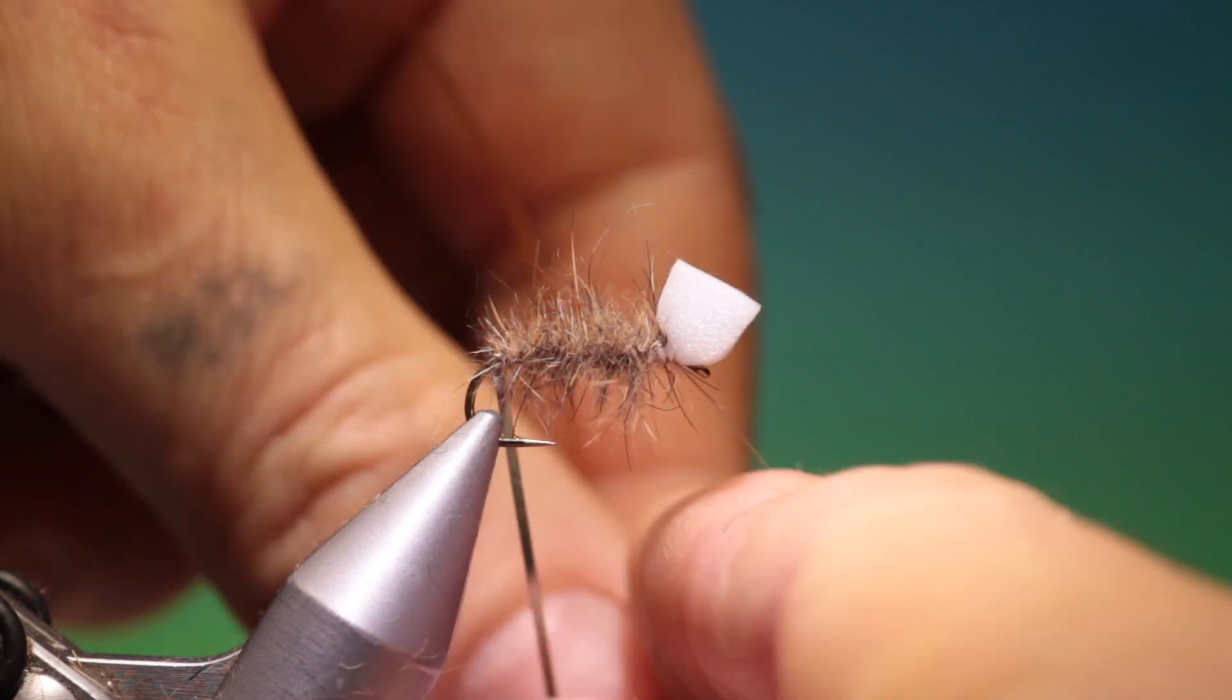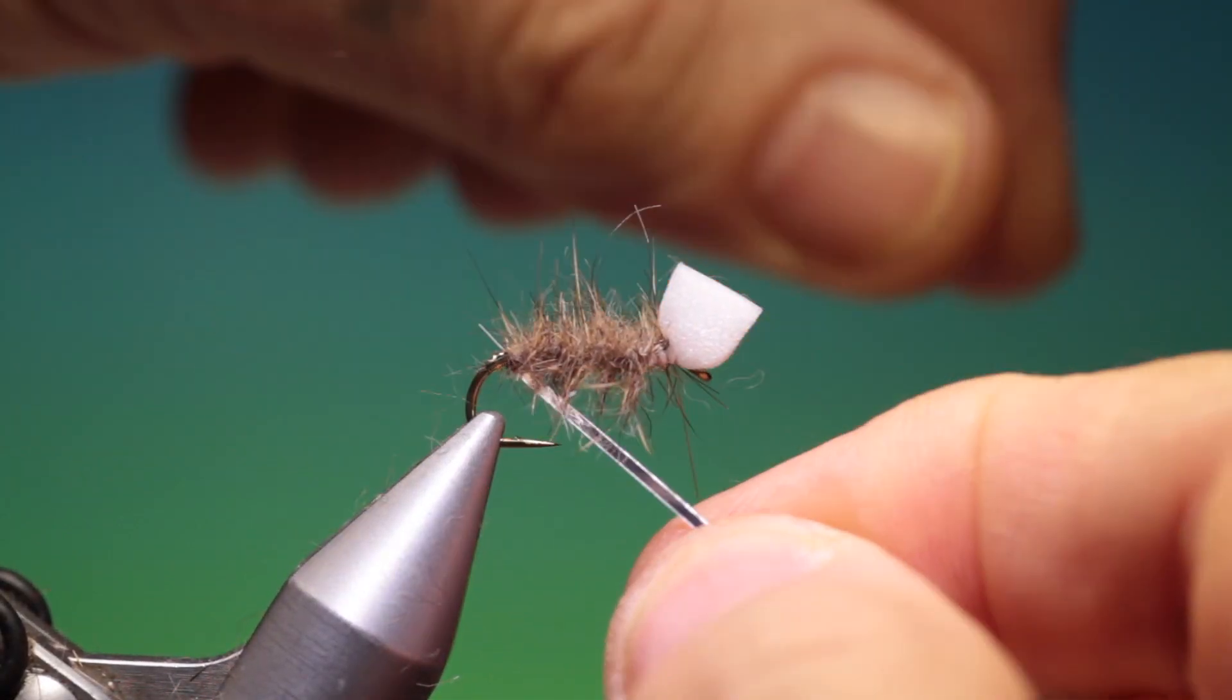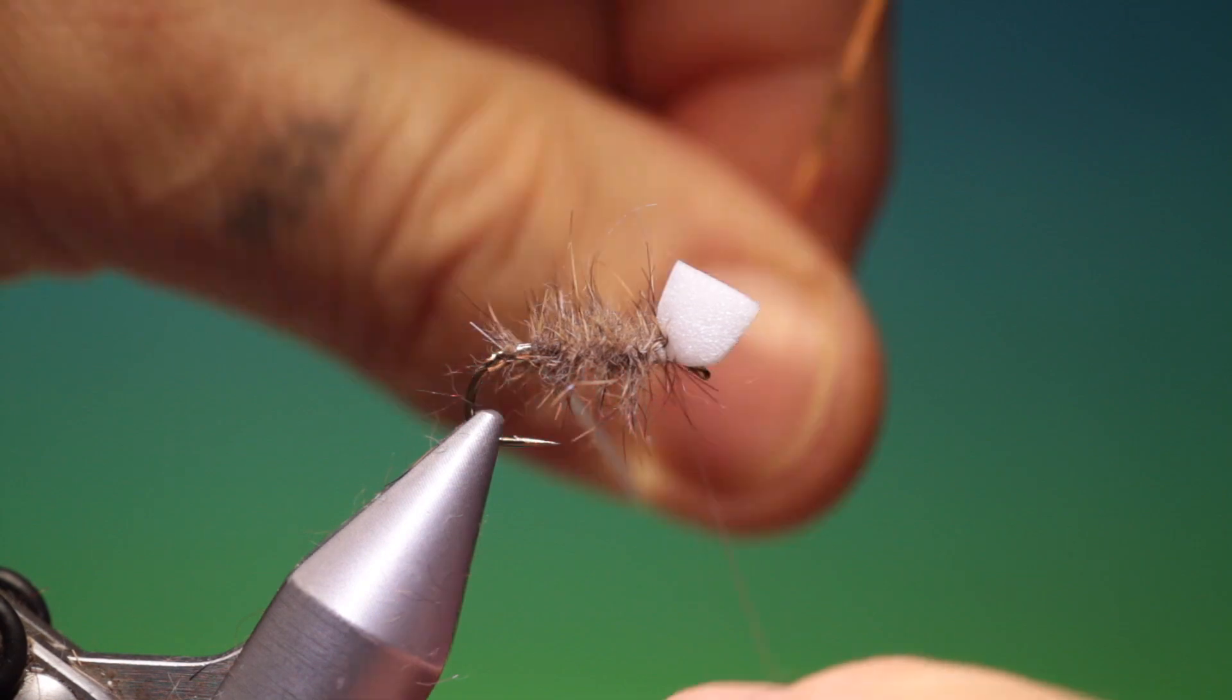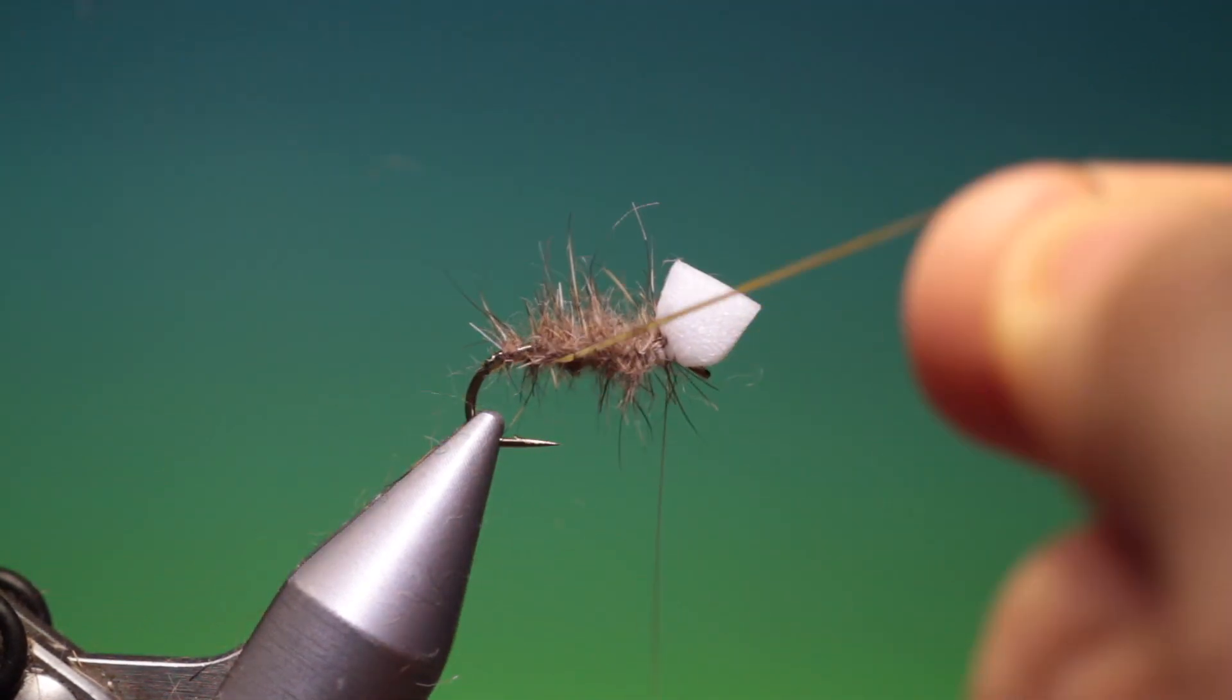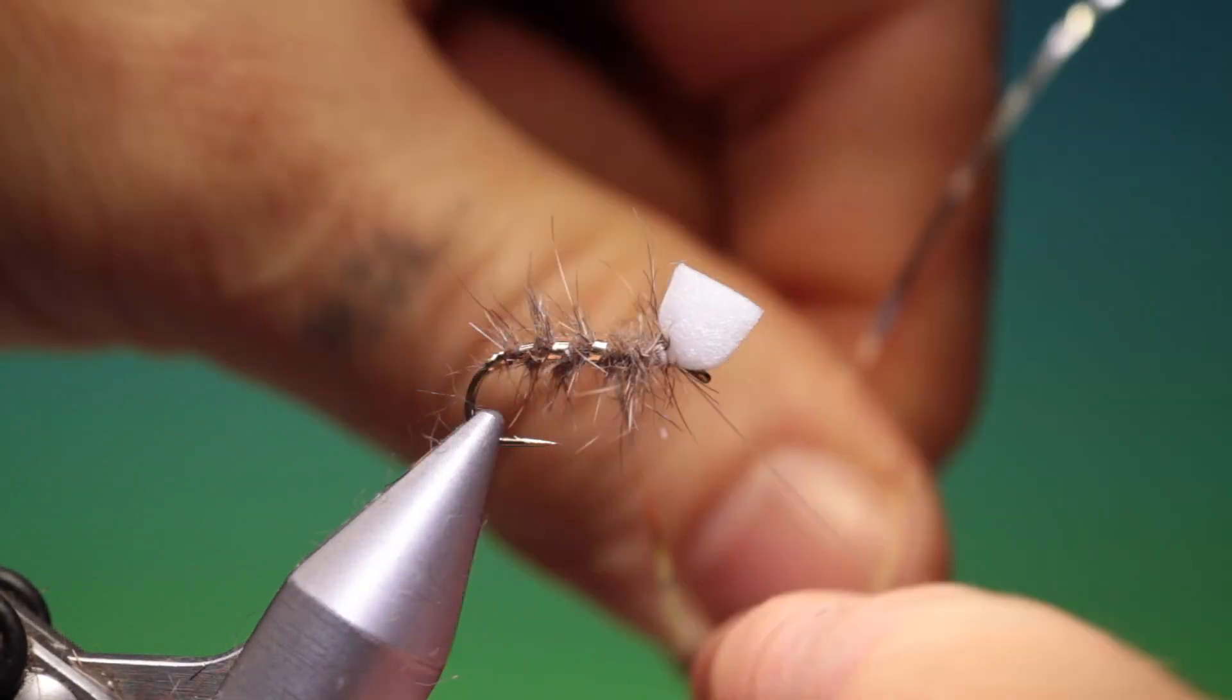And then we take our tinsel, and what we want is a gold tag at the back, and go back up. And then we want to rib it with the tinsel. Like this.